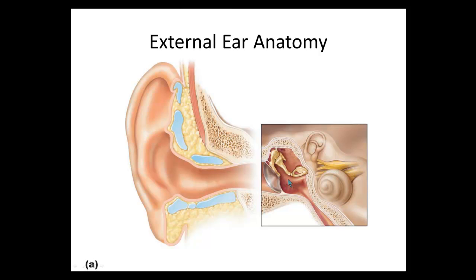Over time those tubes will fall out, and as children age the eustachian tube becomes wider and more vertical. This helps drain the middle ear and keeps it healthy, reducing exposure to chronic infections.